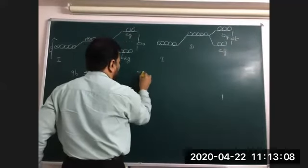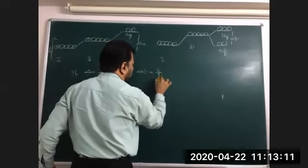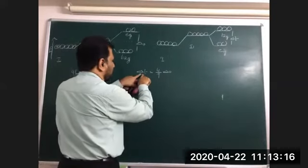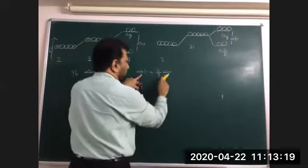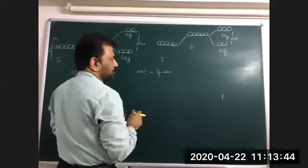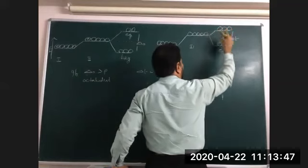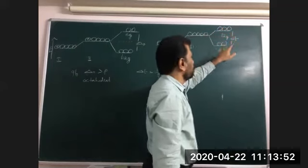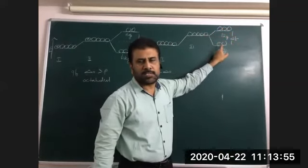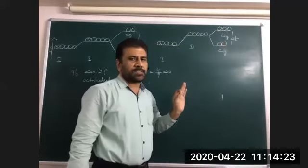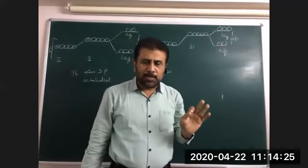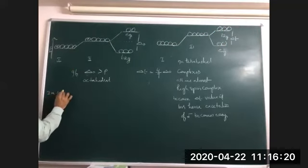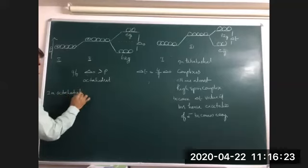Delta t is equal to four-ninths delta o. This indicates tetrahedral splitting is less when compared to octahedral splitting. So if this is less, then automatically electrons will go into the higher orbitals. So there is no question of low spin complexes in tetrahedral — hence in tetrahedral complexes, low spin complexes are very rare.